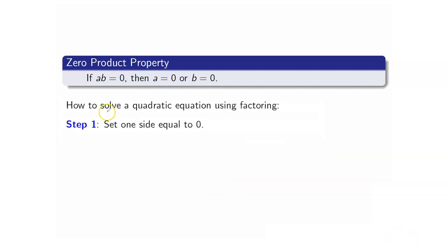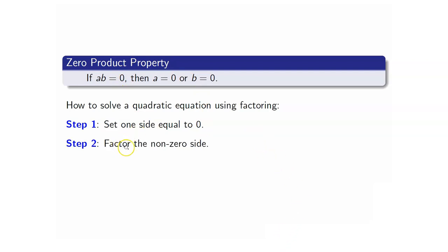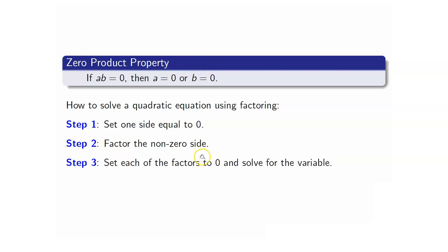Here are the steps in solving a quadratic equation using factoring. The first step is to set one side equal to zero so that we can make use of the zero product property. The second step is to factor the non-zero side. And once you have factored the non-zero side, you can set each of the factors to zero and solve for the variable.